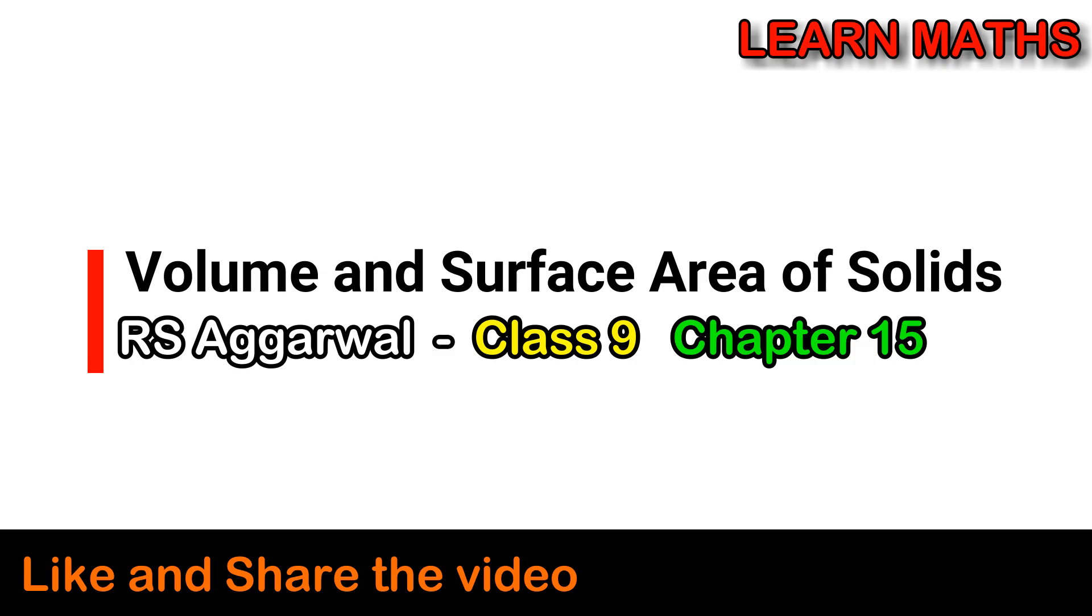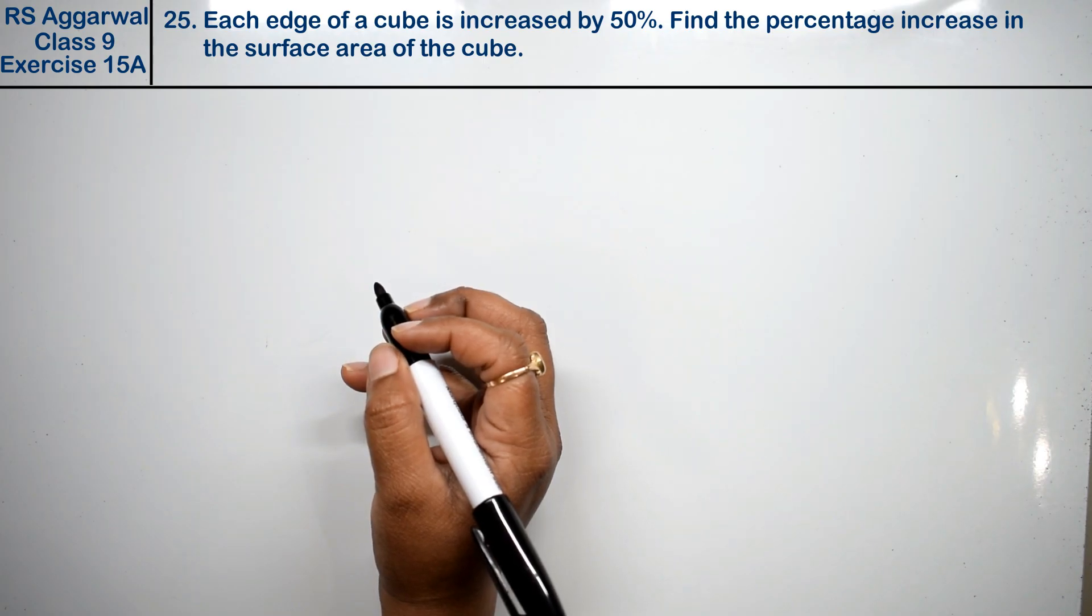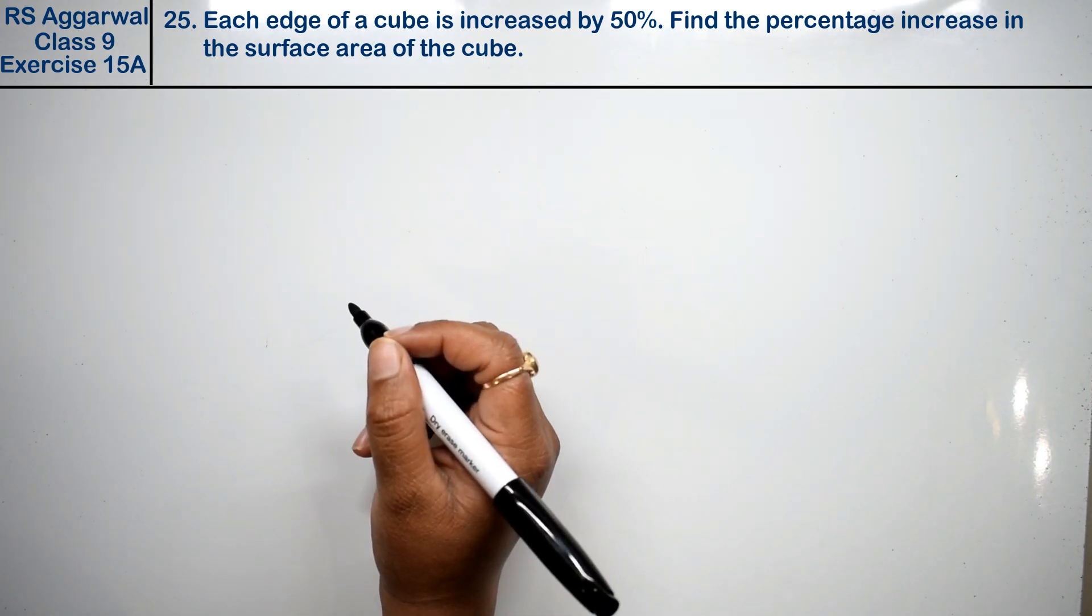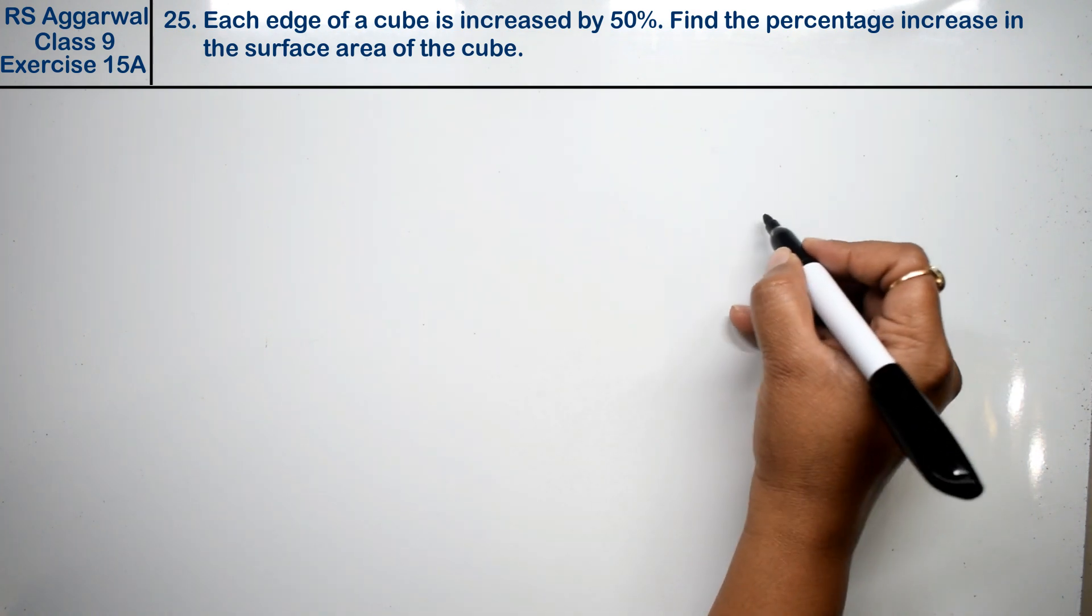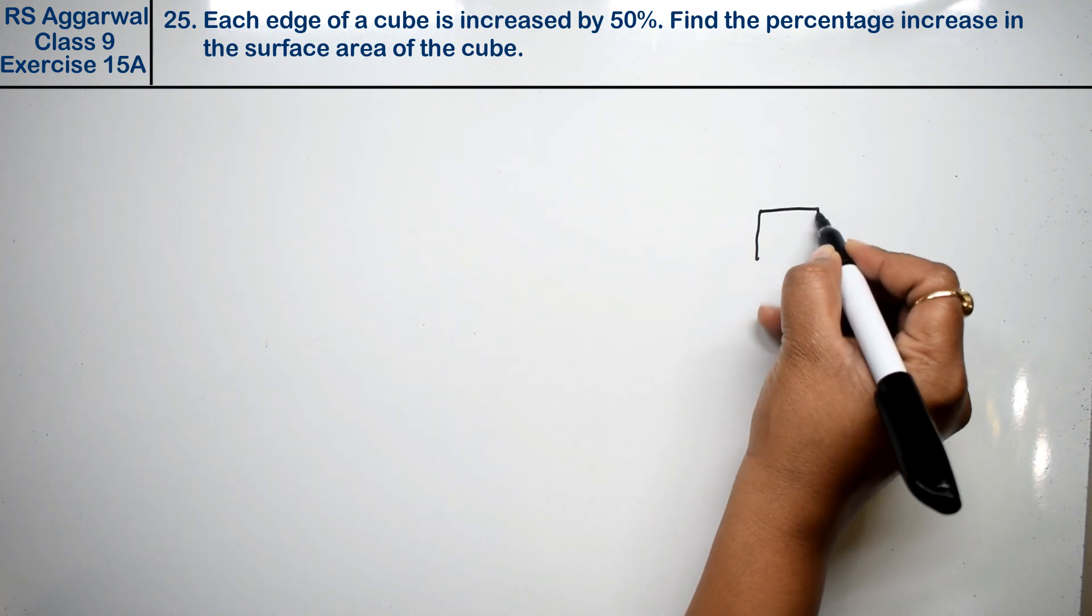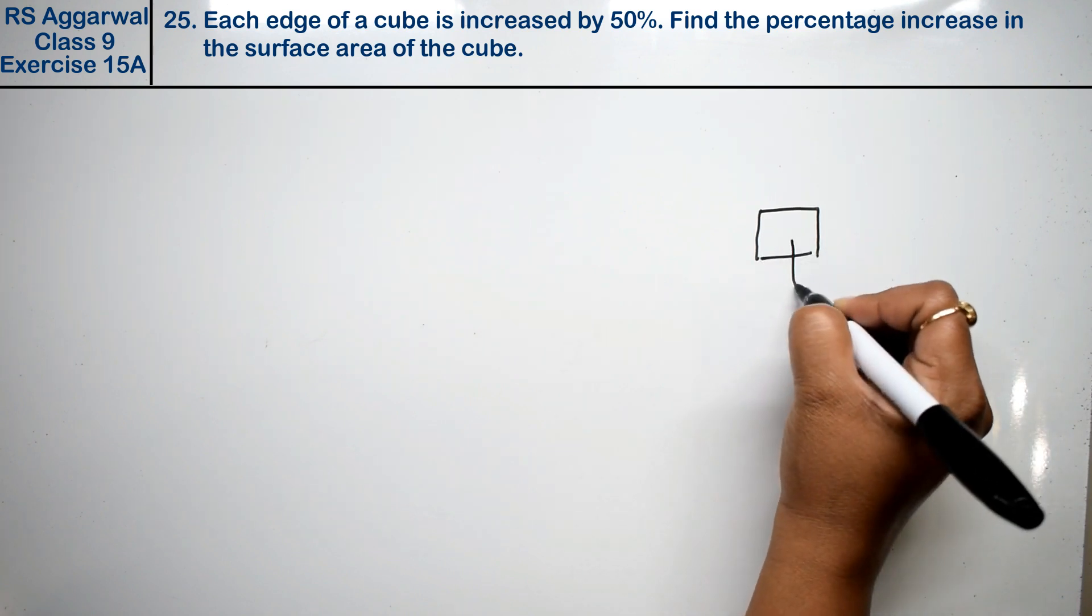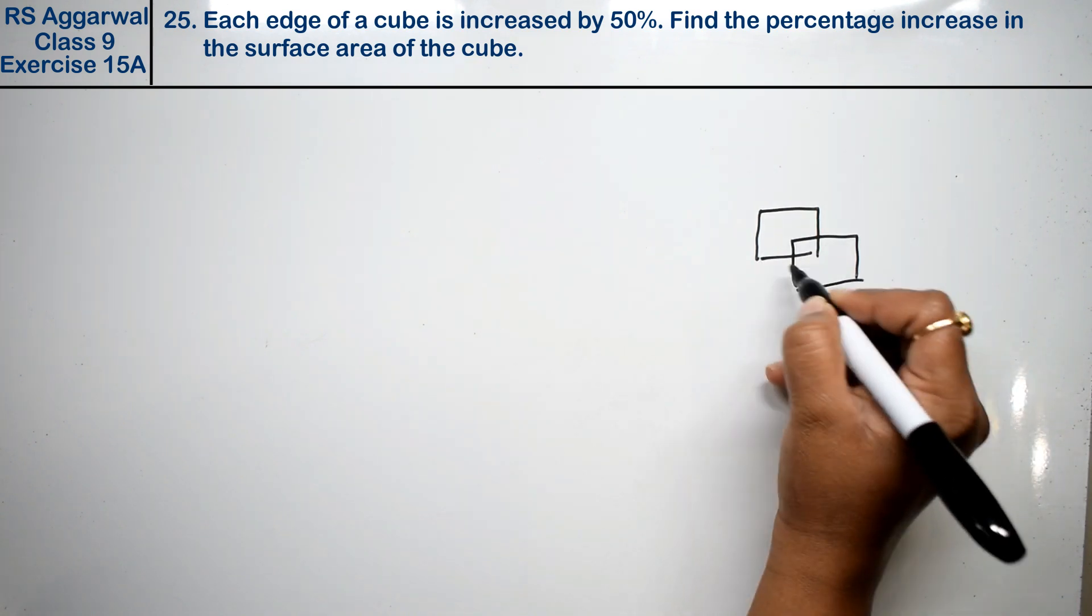Let's do question number 25 of exercise 15A, that is volume and surface area of solids. Question 25 is: each edge of a cube is increased by 50%. He says each edge of a cube is increased by 50%.